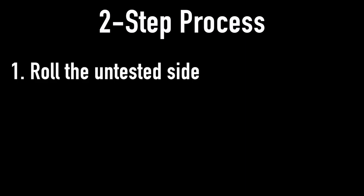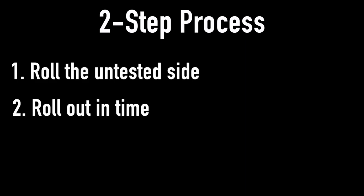I go through a two-step process when it comes to rolling strangles. The first step is that I'm going to try to roll the untested side. The second step is that I'm going to roll out my short strangle to a later expiration. I'm going to explain those two steps so it's completely clear.